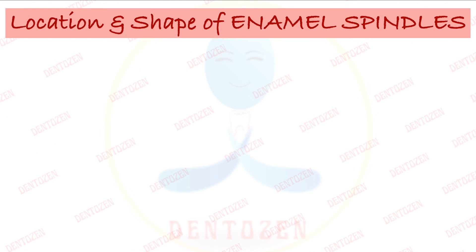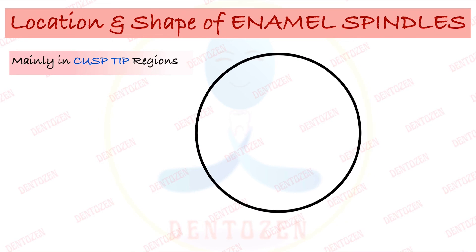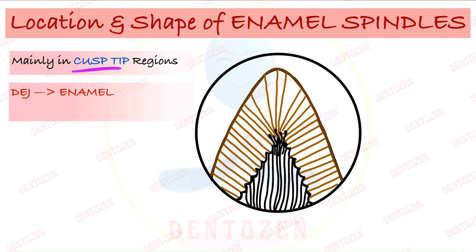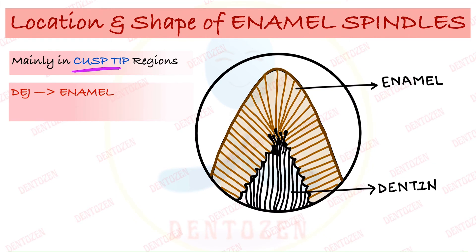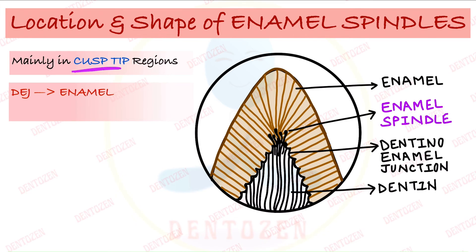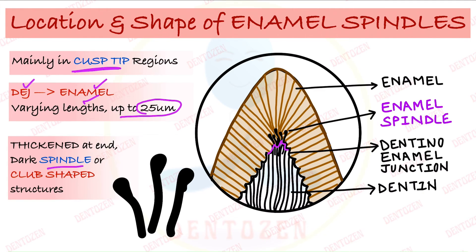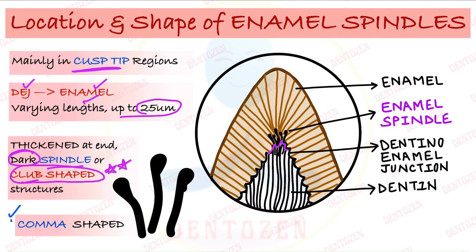For location and shape: enamel spindles are mostly seen in the cusp tip region when seen under a ground section. In the diagram, draw enamel rods above, dentinal tubules below, and spindle-shaped dark structures at the cusp tip crossing from the dentino-enamel junction into enamel. Their length can be variable, up to 25 microns. Their shape is thickened at the end, resembling a spindle — also called club-shaped or comma-shaped structures, which can be important viva and entrance questions.